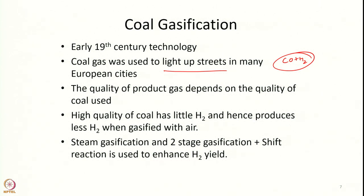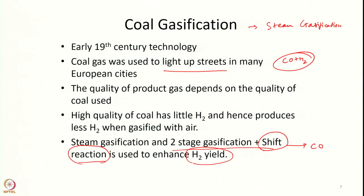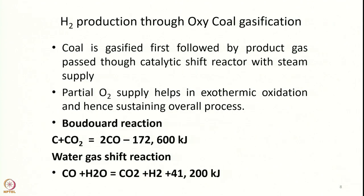The quality of the product gas depends on the quality of coal used. If the coal has a high amount of hydrogen it will yield slightly higher hydrogen, even though coal gasification is inherently a steam gasification process. Poor quality coal will have relatively higher hydrogen compared to high-grade coal. Steam gasification and two-stage gasification plus the water gas shift reaction are used to enhance hydrogen yield — specifically the reaction CO + H₂O → H₂ + CO₂.